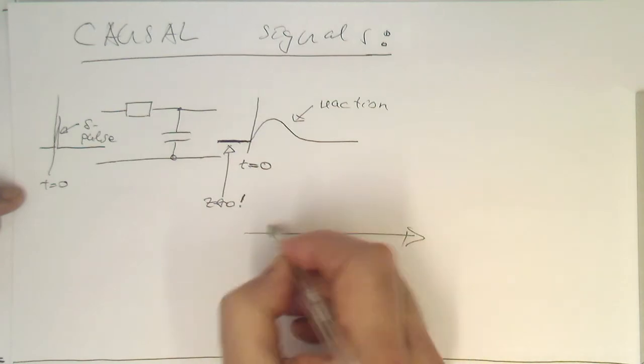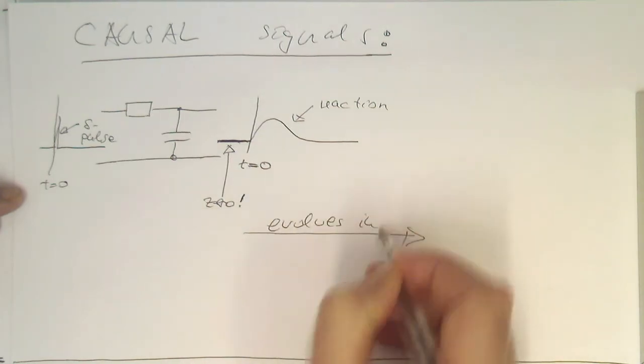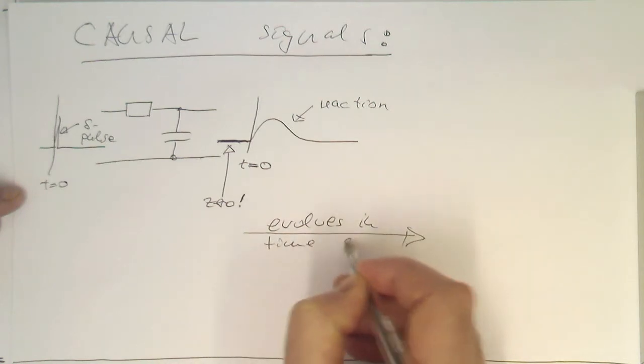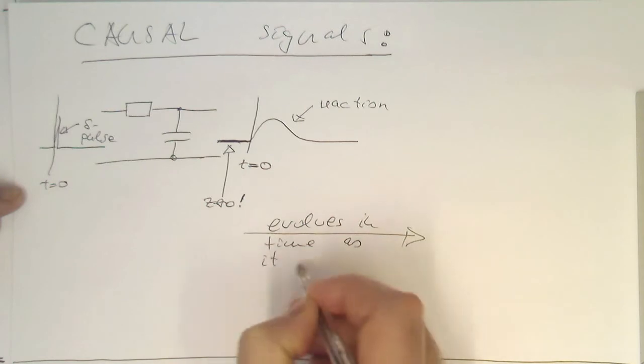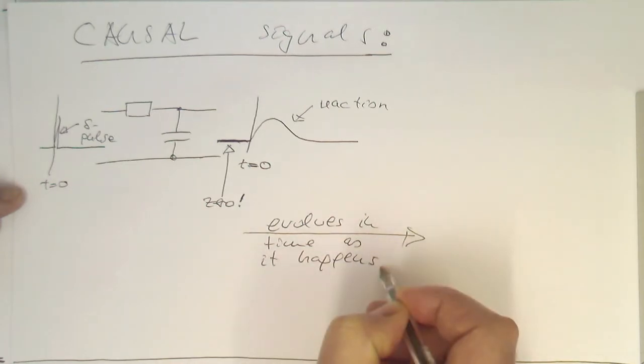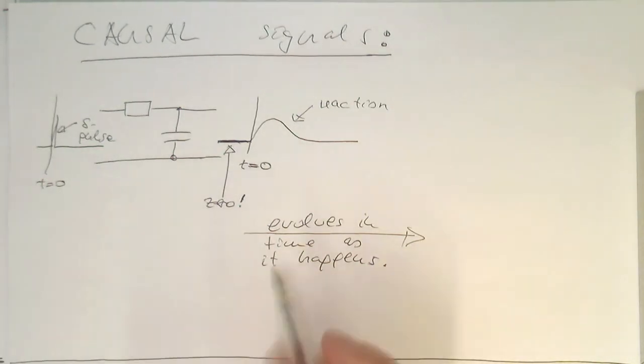So the system evolves in time as it happens, which reacts to these input signals here. So how do we do a mathematical definition of that? And the mathematical convention is very simple.